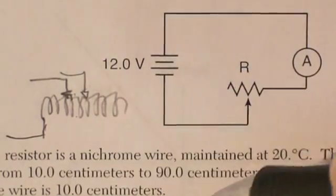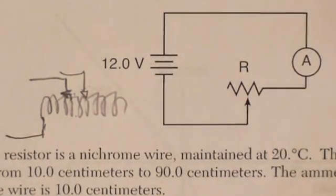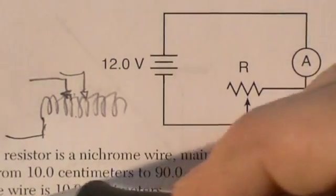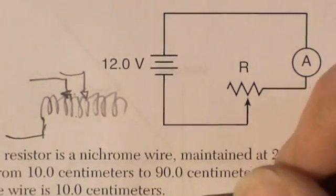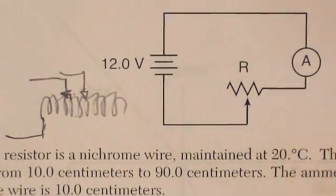All right. So anyway, it goes from 10 centimeters to 90 centimeters. The amp meter reads 2 amps when the length of the wire is 10 centimeters. Determine the resistance of the 10 centimeter length of nichrome wire.